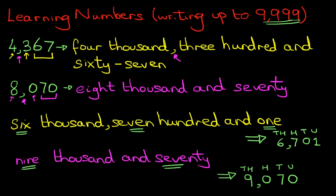9, 0, 7, 0. 9,070. And that is how we write numbers up to 9999.